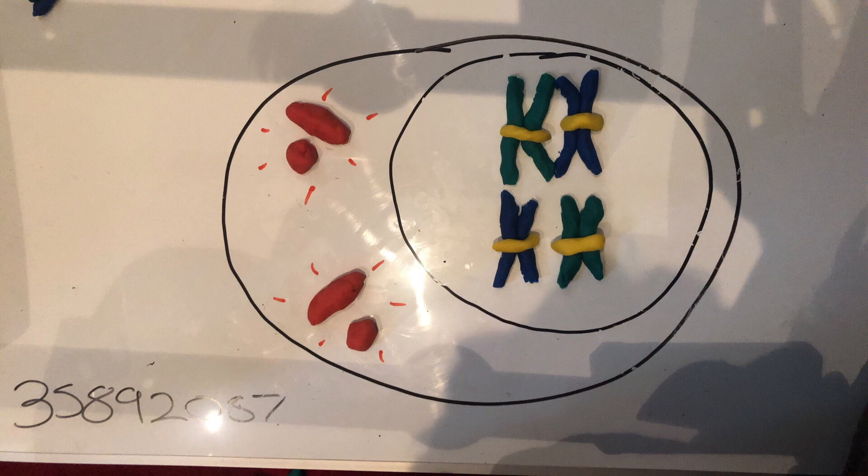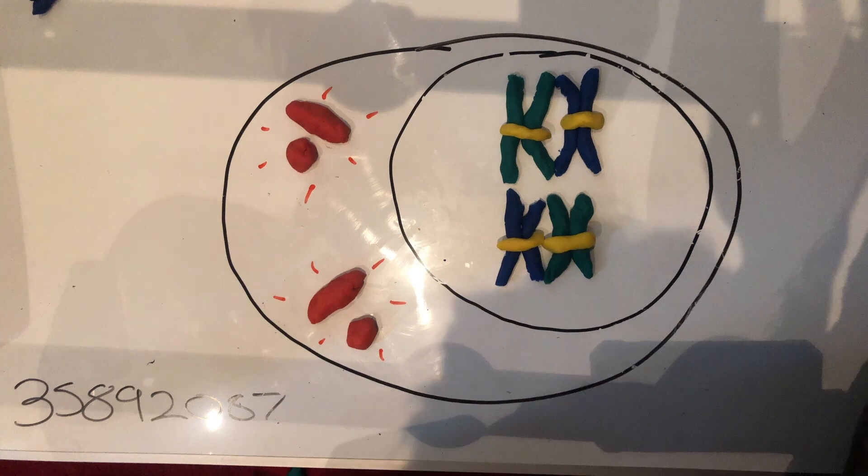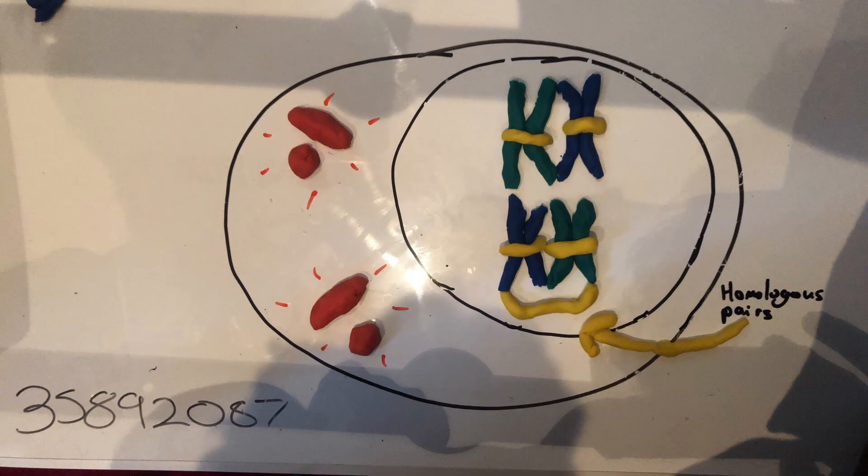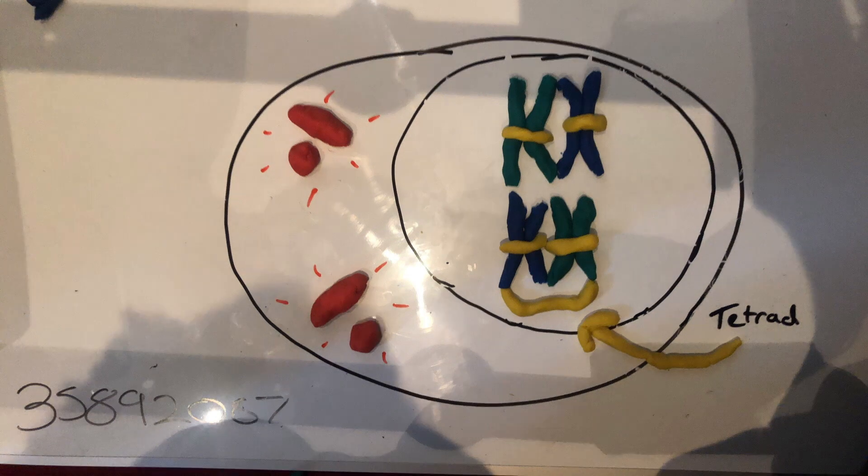After this has taken place, the movement of sister chromatids creates homologous pairs which lie side by side in a process called synapsis, which in turn forms a tetrad. These homologous pairs share similar but not identical genes.